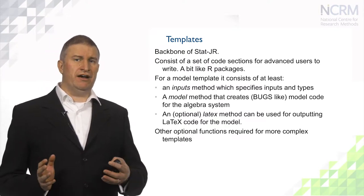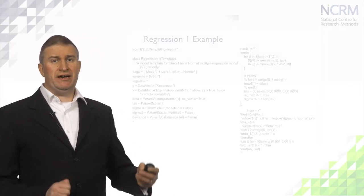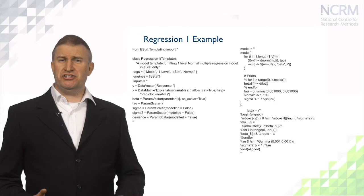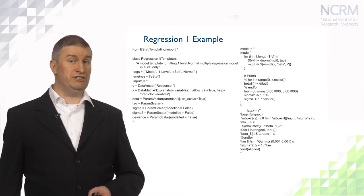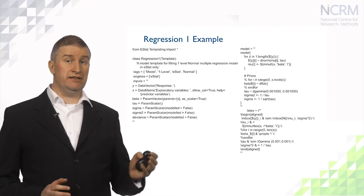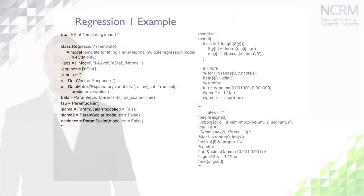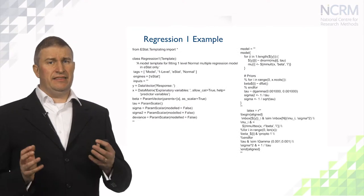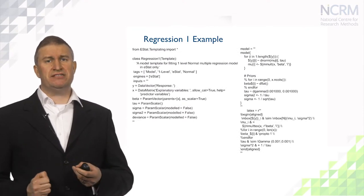For more complex templates there are other functions. Here is an example of template code for a template that fits a regression model. This is shown in part to show that the Python code is really quite short and you can clearly see the input, model, and LaTeX methods. The inputs method has two inputs corresponding to the response and the predictor in the regression template, given as y and x. These are required, and in brackets you will see text that will be displayed when these inputs are asked for by the system. The input method also contains parameters that are needed for the model to run.